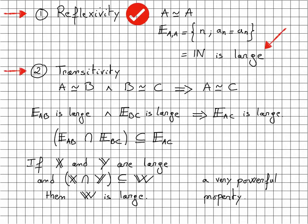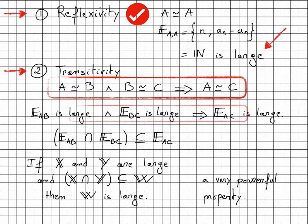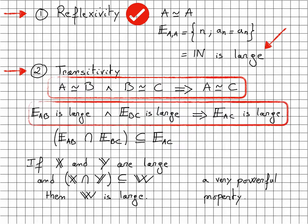Secondly, we need to be sure that the relation we are trying to define is transitive, meaning that if A is equivalent to B and B equivalent to C, we have A equivalent to C. In other words, if the set E_AB is large and the set E_BC is large, then the set E_AC is large.